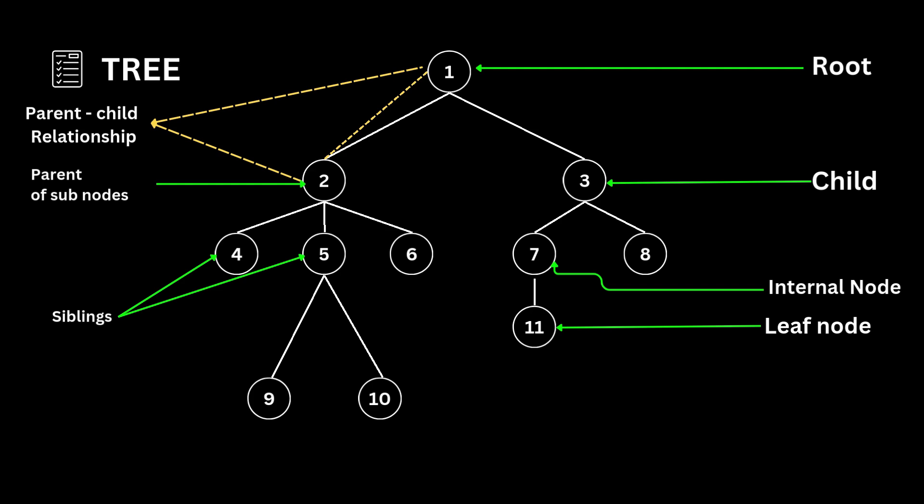An ancestor node is any predecessor on the path from the root to that node. The root node has no ancestors. In the tree depicted here, 1, 2, and 5 are the ancestors of node 10. The immediate successor of the given node is known as its descendant. In the figure shown here, node 10 is the descendant of node 5.